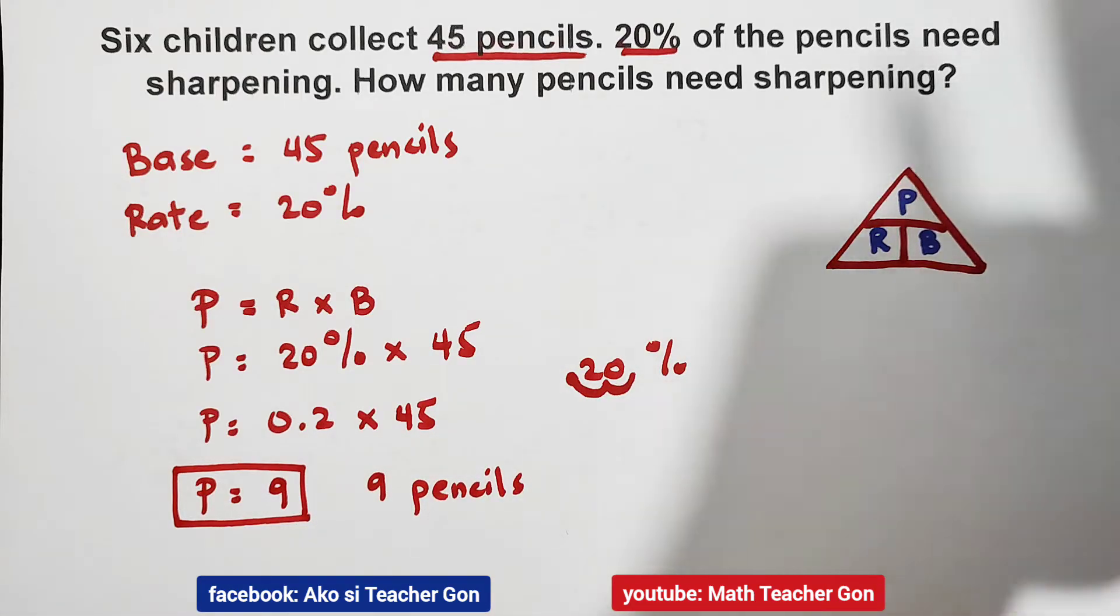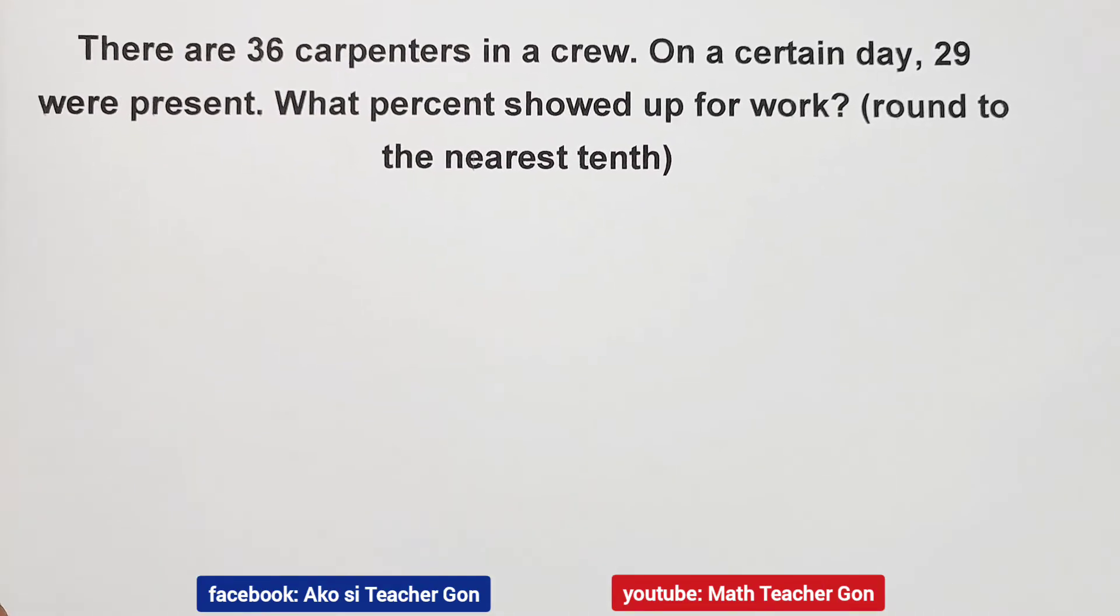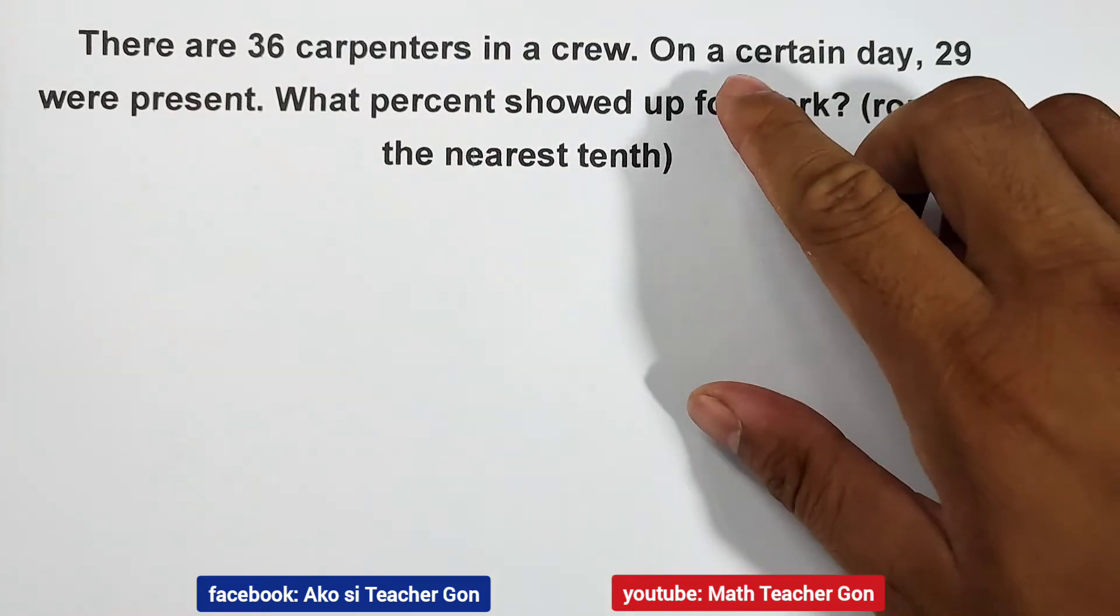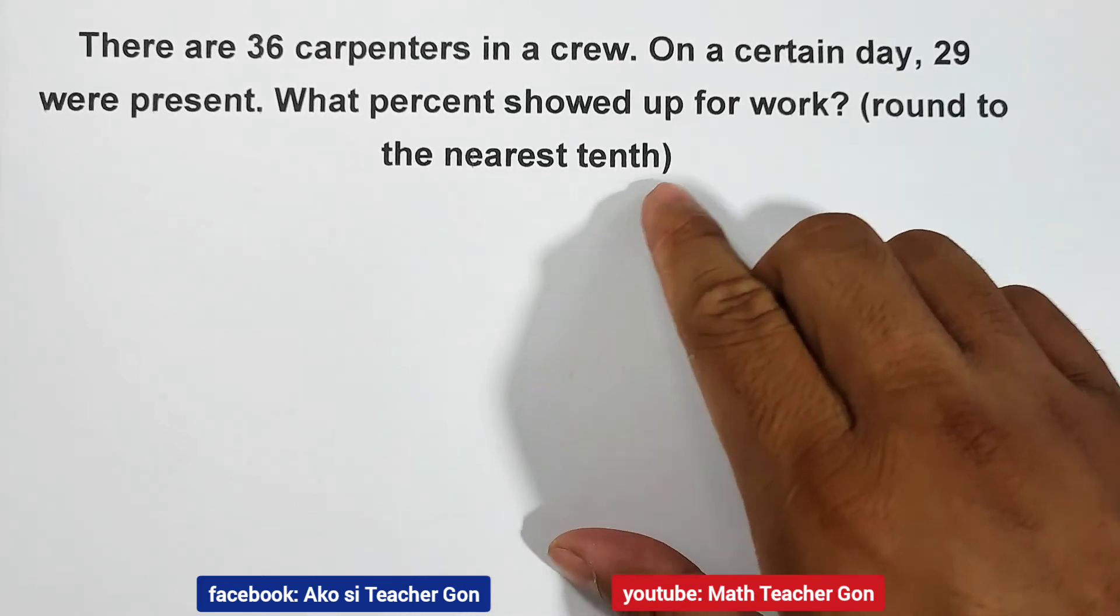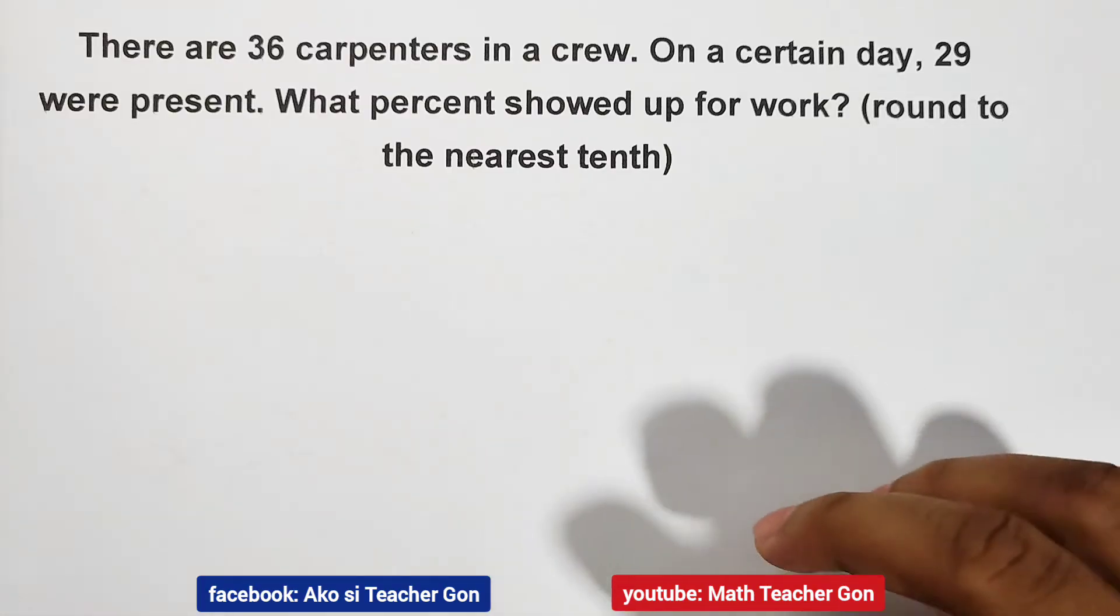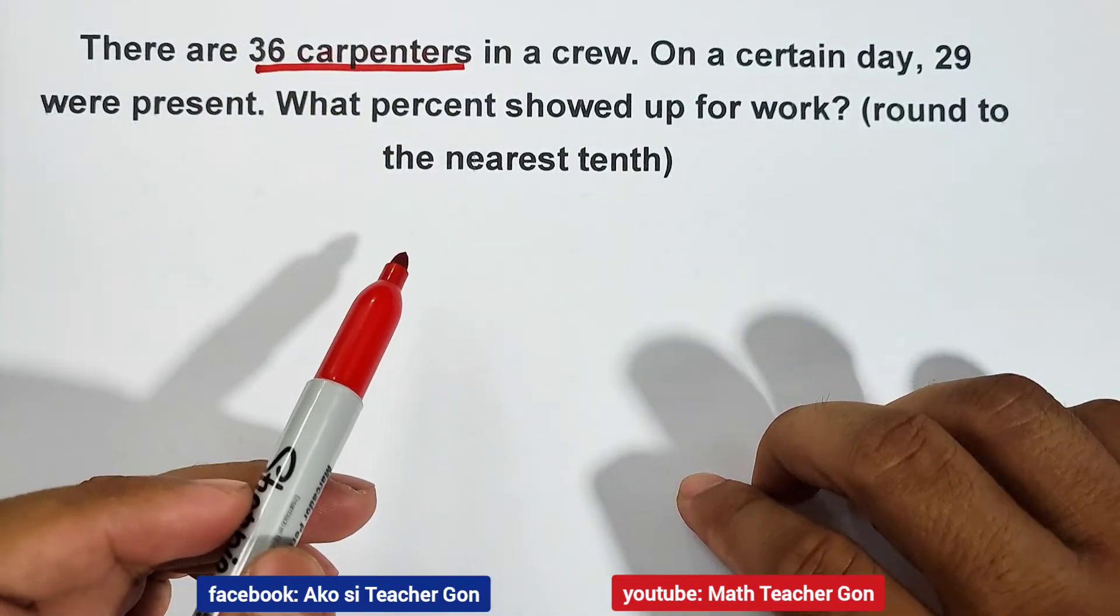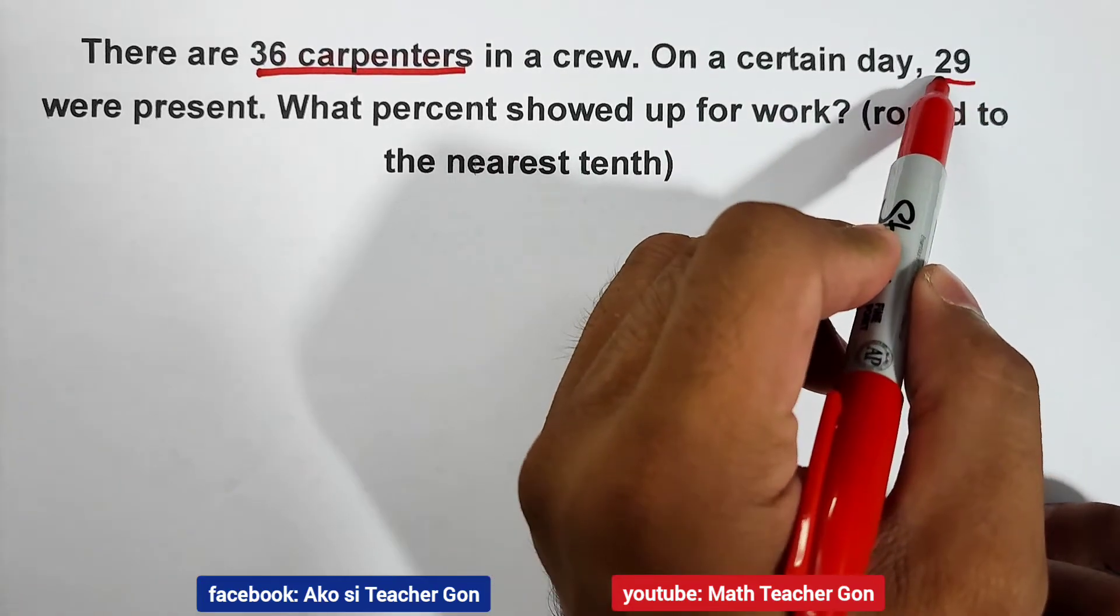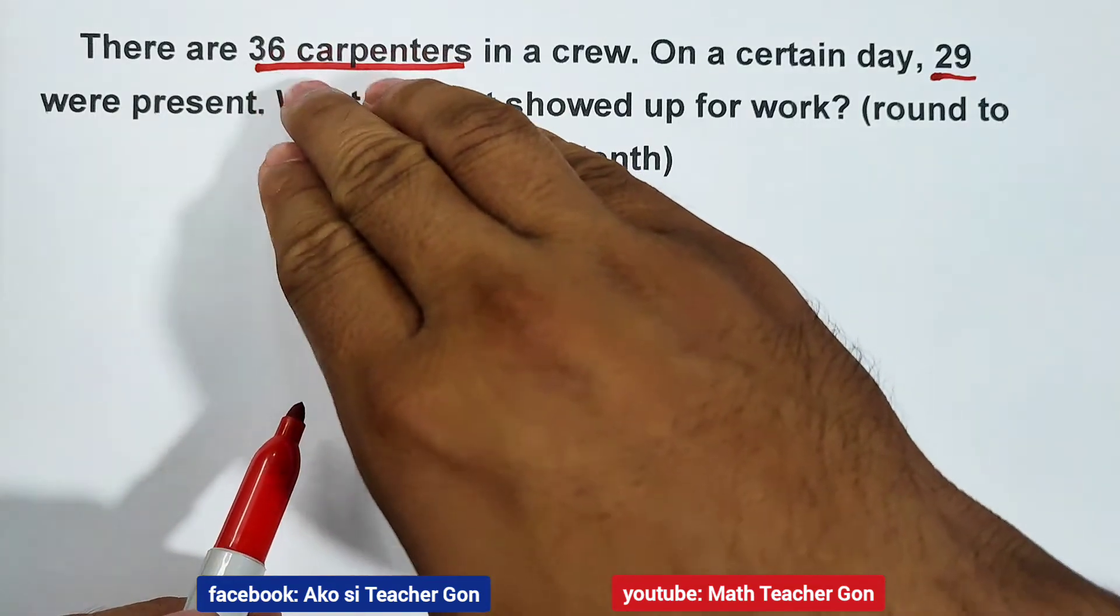Now let's move on with the second example. What we have here is this: There are 36 carpenters in a crew. On a certain day, 29 were present. What percent showed up for work, round to the nearest tenth? Now, all in all, we have 36 carpenters. And then on a certain day, we don't know the exact day, only 29 workers were present.